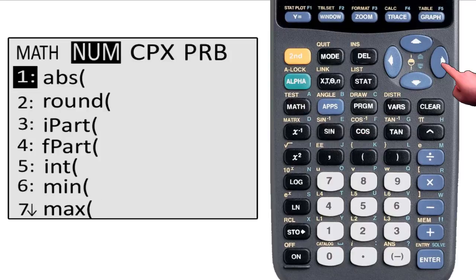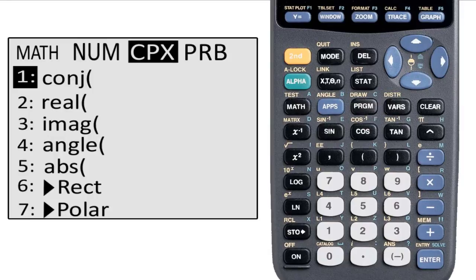The third page of the math menu is the complex menu. It has seven functions here: conjugate, real part, imaginary part, angle, which is the same thing as argument, absolute value, which is the same as the modulus, and two conversion functions that convert to rectangular form or polar form.